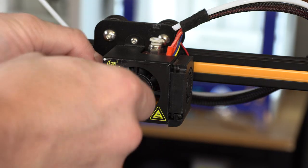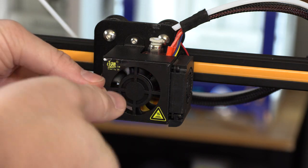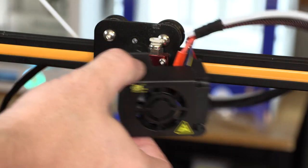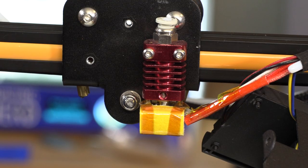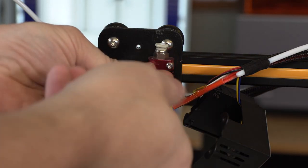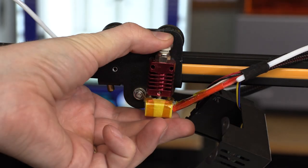Go ahead and grab that 2mm hex wrench and remove the two screws holding the fan and fan shroud on. With the fan and fan shroud off, the cooling block is exposed. There's two screws holding that cooling block in place. Go ahead and use your 2mm hex wrench and remove those.